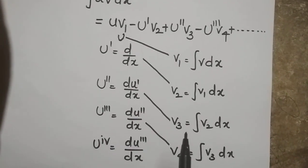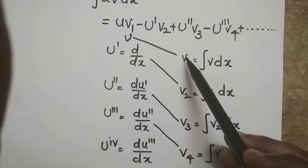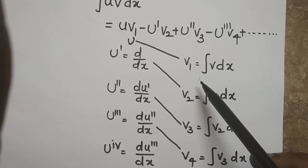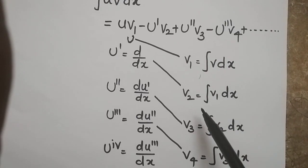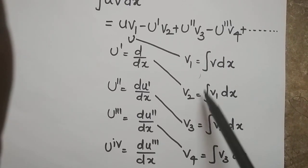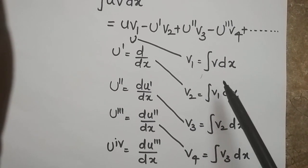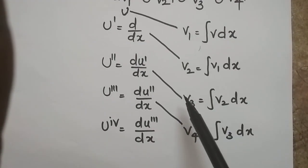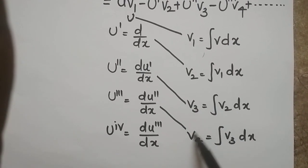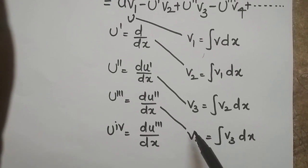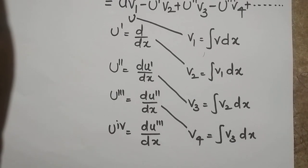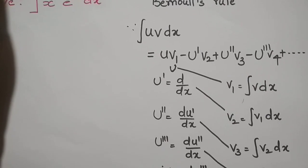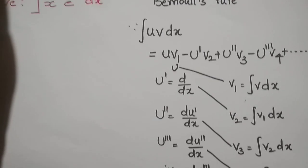For the integration side: v1 stands for the integral of v dx, v2 is the integral of v1 dx, v3 is the integral of v2 dx, and v4 is the integral of v3 dx, and so on. We continue this procedure until the derivative of u becomes zero.